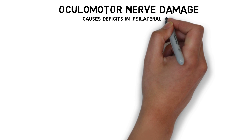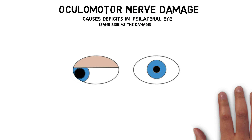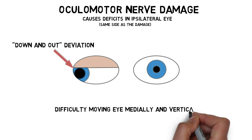Damage to the oculomotor nerve causes deficits in the ipsilateral eye. A common symptom is a deviation of the affected eye to the side and downwards, due to the paralysis of the medial rectus and inferior oblique and the unopposed action of the unaffected extraocular muscles. Medial eye movements may also be impaired due to paralysis of the medial rectus, and vertical eye movements may be impaired due to paralysis of the superior and inferior recti and inferior oblique.